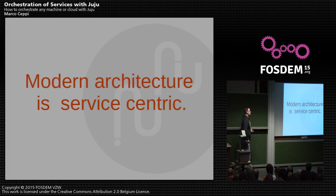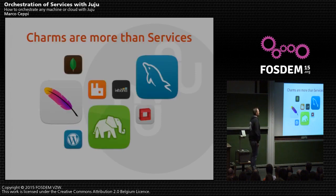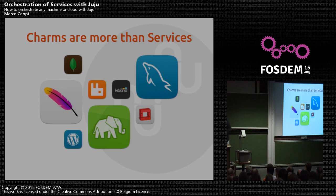Modern architecture is service-centric because we started talking about microservices, containerization, and immutable infrastructure — these all buy into that. And we have a model for that called Charms. But Charms are more than just services. Charms encapsulate ops knowledge. They also dictate how it's going to work and interface with other services in your stack.